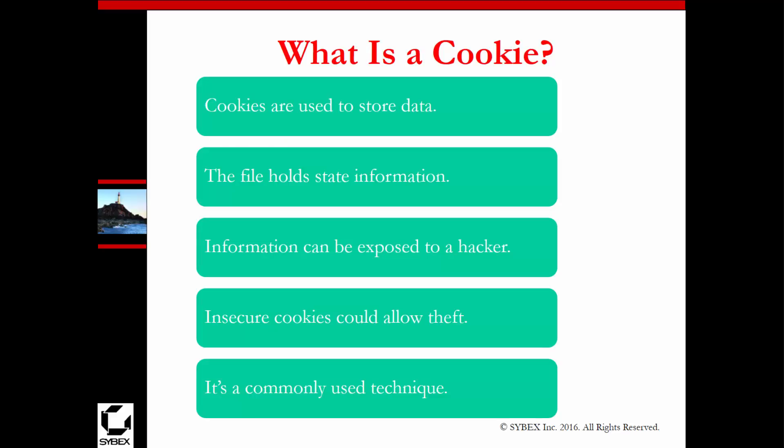Our browsers store information from servers via cookies. Cookies are used to store data from previously visited sites and hold state information. That information can be exposed to a hacker — it depends on what type of information is stored in the cookie. It could be auto-filled data, sometimes usernames, sometimes not, depending on the browser and its security level. Insecure cookies could allow for theft.